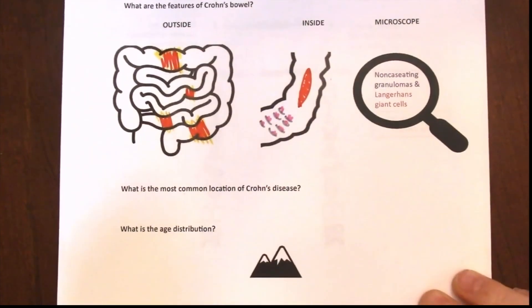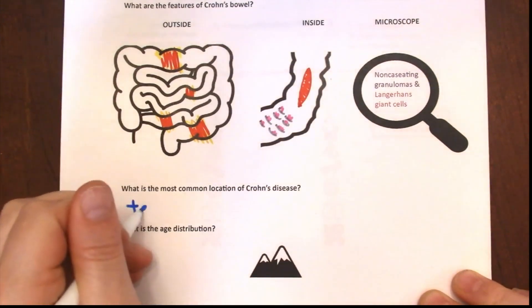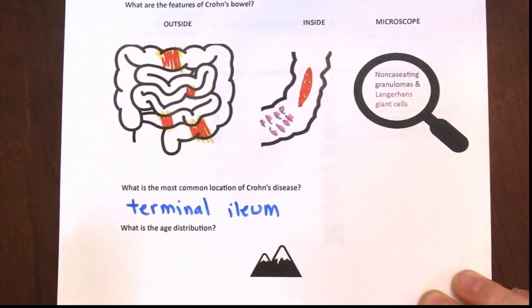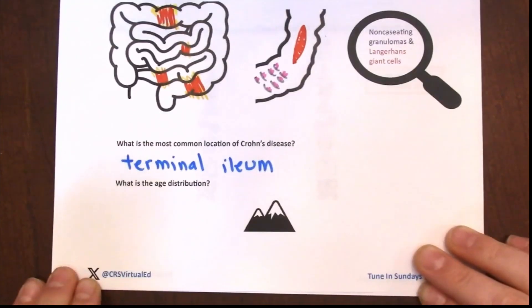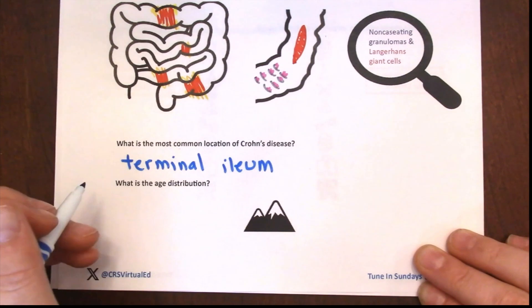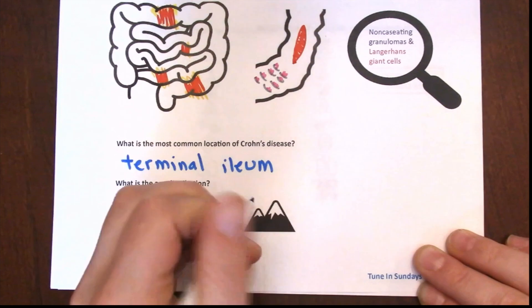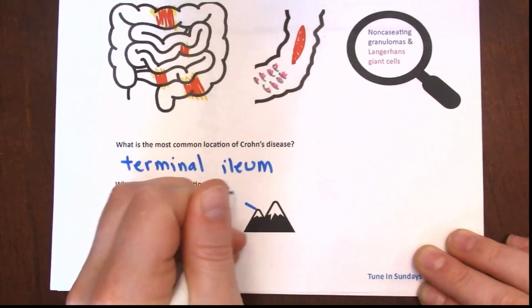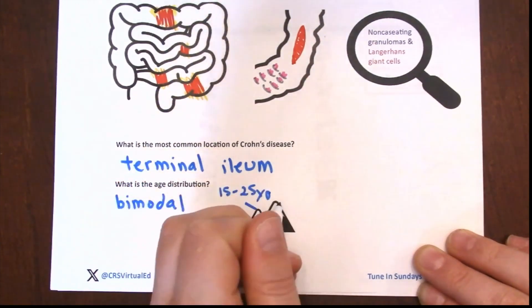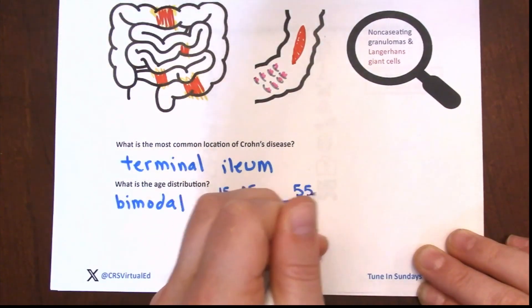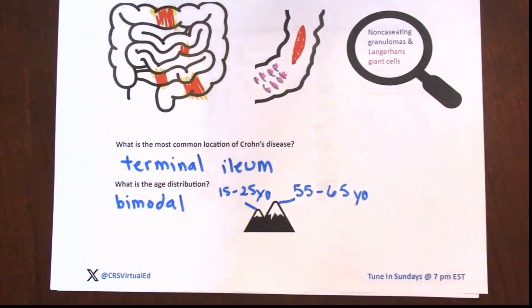The most common location of Crohn's disease is the terminal ileum. The typical age distribution is bimodal: young patients aged 15 to 25 years old, and then older patients usually 55 to 65 years old.